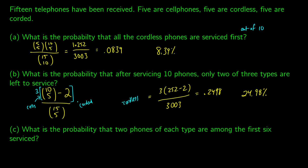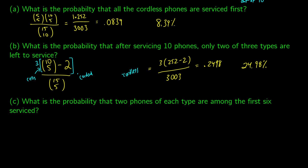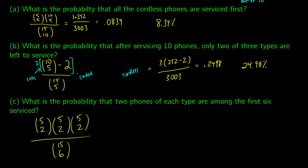What is the probability that two phones of each type are among the first six serviced? Out of each group of five, we choose two. So it's five choose two times five choose two times five choose two, divided by 15 choose six. Five choose two is 10, so we get 10 × 10 × 10 = 1000. 15 choose six is 5005. So 1000 / 5005 = 0.1998, or 19.98%.